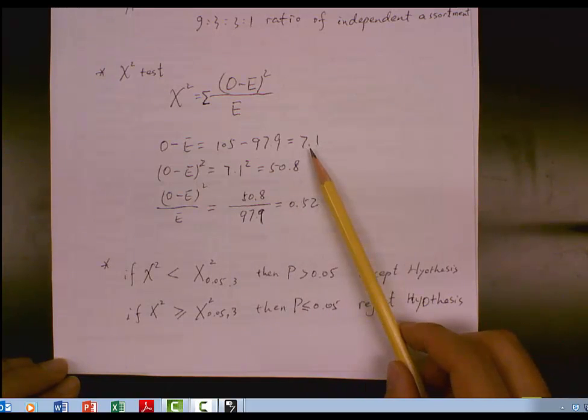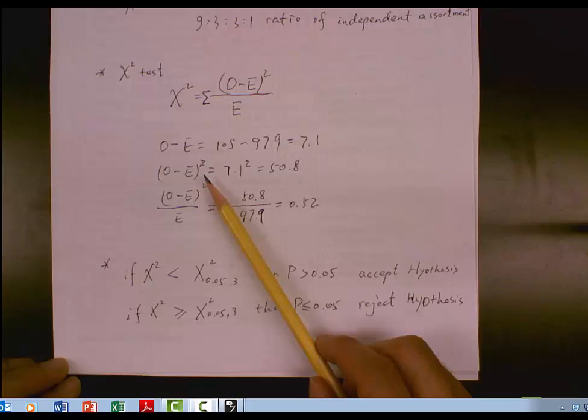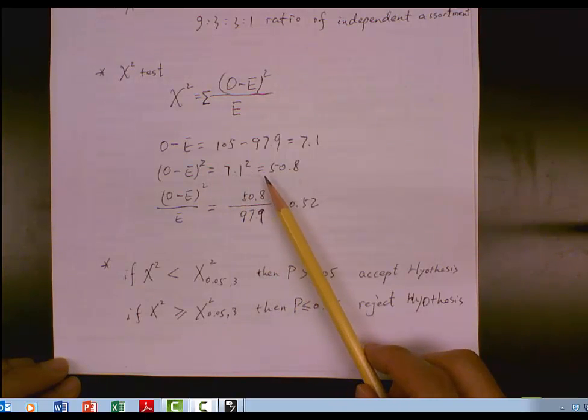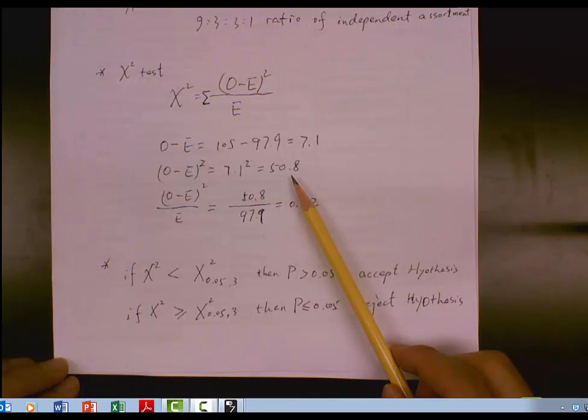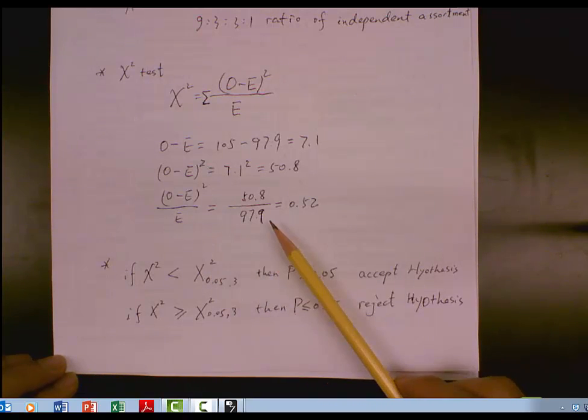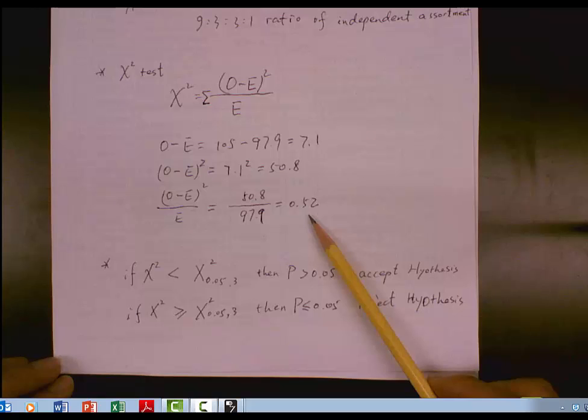Squared at the value, O minus E squared, equals 7.1 squared equals 50.8. This O minus E squared divided by expected value in that group. So that's 50.8 divided by 97.9. The value is 0.52.